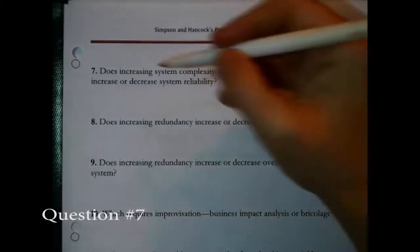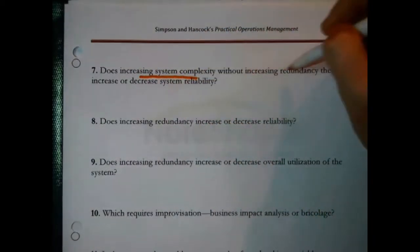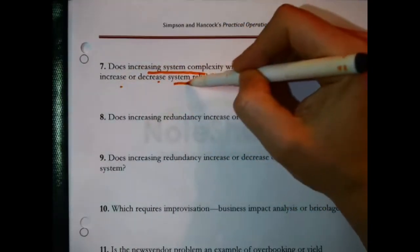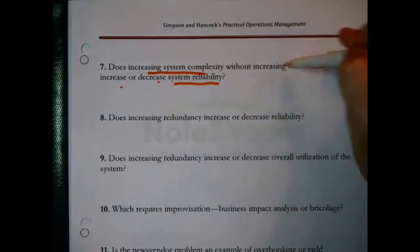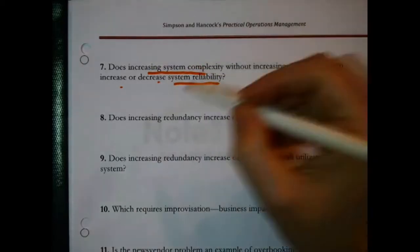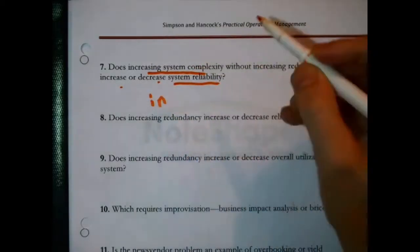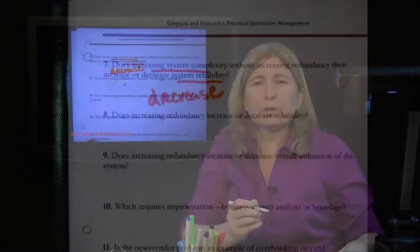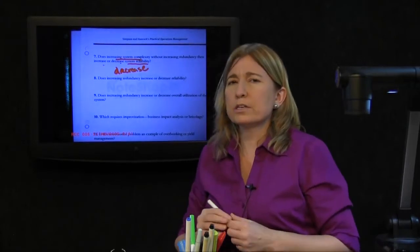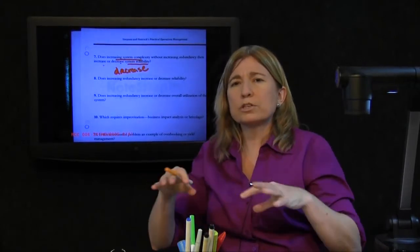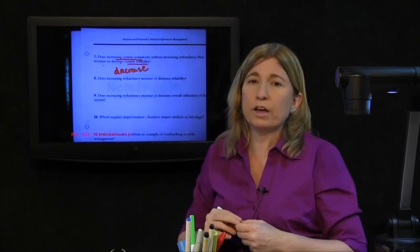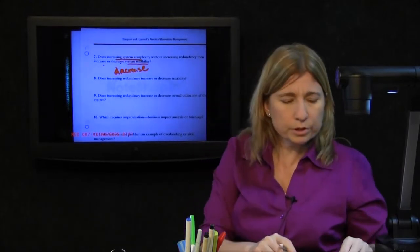Does increasing system complexity without increasing redundancy then increase or decrease system reliability? Increasing complexity without adding redundancy is definitely going to decrease system reliability. Because the more complexity you add, the more links and relationships and elements that you have added to the picture that could any one of them potentially fail, and that's going to interfere with reliability.